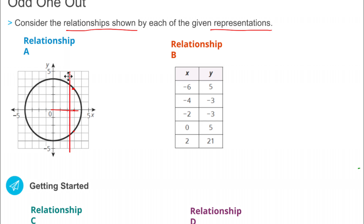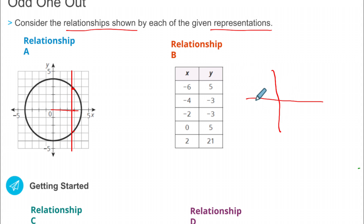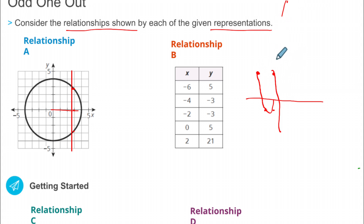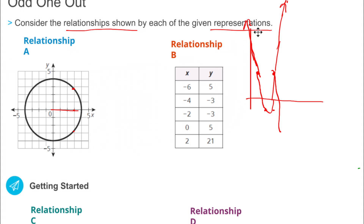Let's look at graph B — we have a table and I'm going to do a little sketch. Plotting the points: negative 6 gives 5 (up high), negative 4 and negative 2 both give negative 3 (near the bottom), 0 gives 5 (up high again), and 2 gives 21 (way up). We get a U-shaped curve. If I take the vertical line and pass it through the whole graph, it only hits once at every point, so this is a function.